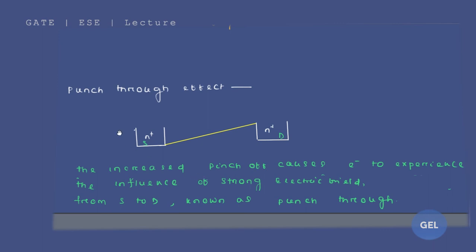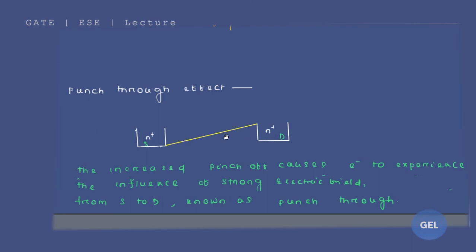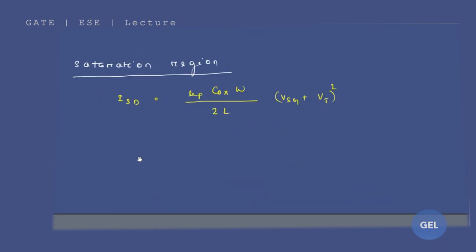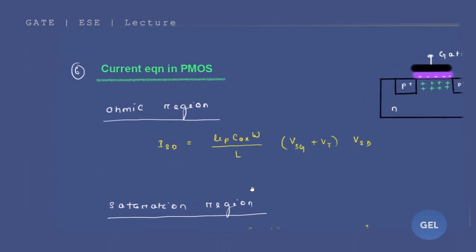There is another interesting concept known as the punch-through effect. From source to drain, increased pinch-off causes electrons to experience a very strong electric field. If you increase the pinch-off voltage, a strong electric field acts on the electrons from source to drain — this is called the punch-through effect. Remember: in punch-through, electrons experience a strong electric field from source to drain.